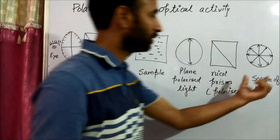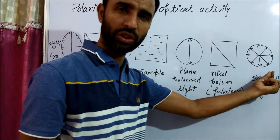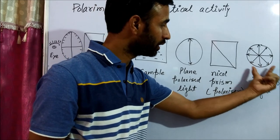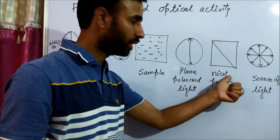First, this is the source of light. Normally yellow light, meaning sodium light, is used. Now this source of light first is passed through a nickel prism.